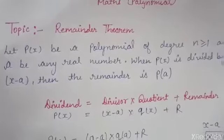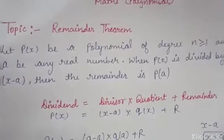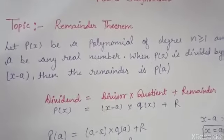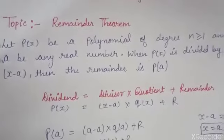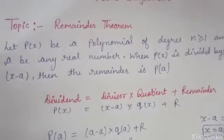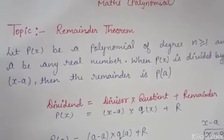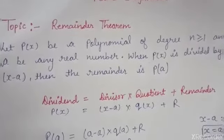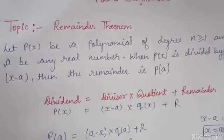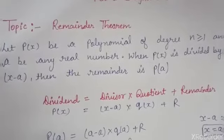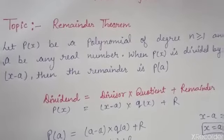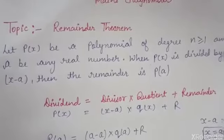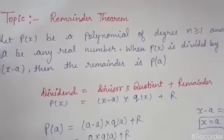But how can we prove it? For proving this, we use the identity: dividend equals divisor into quotient plus remainder. Here, the dividend is P of X, the divisor is X minus A, and the quotient is Q of X. The remainder is constant because the degree of the remainder is always less than the degree of the divisor.